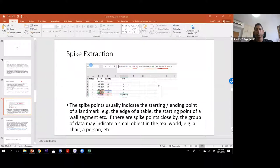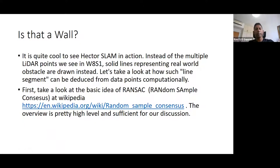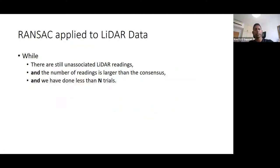In the actual lidar, we apply what is called the RANSAC algorithm — a highly complex but understandable algorithm. While scanning, it first looks at all the unassociated lidar readings — many points that haven't been associated with any particular landmark yet. The number of readings must be larger than the consensus, which is the minimum number of points needed to agree that a group of points is important — that this many points belong to some landmark, a wall or a table or something.